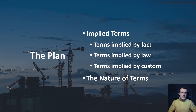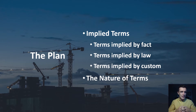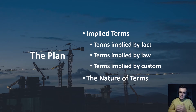In this final video looking at the contents of a contract, we're going to start by looking at implied terms and the various different ways in which a term can be implied into a contractual agreement. Then lastly we're going to look at the nature of terms themselves, collecting together all of the express and implied terms and categorizing them into conditions, warranties, and innominate terms.